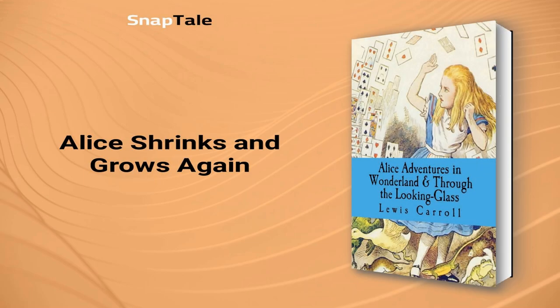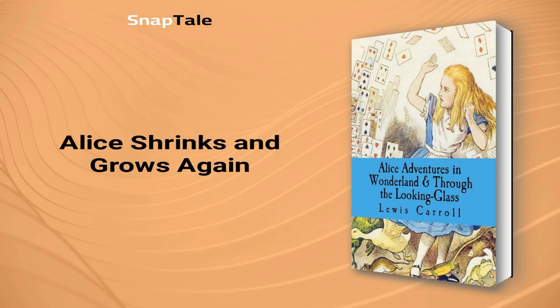Alice Shrinks and Grows Again: After losing the rabbit's gloves, Alice grows big from drinking a potion and gets stuck in a house's chimney. The rabbit sends Bill the Lizard to fetch his gloves, but Alice kicks him back down the chimney. The rabbit gets angry and threatens to burn down the house.